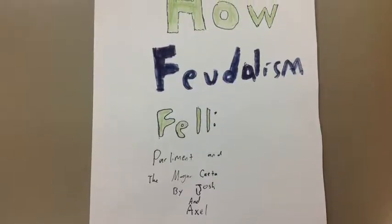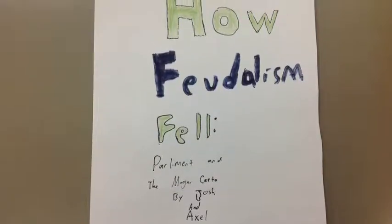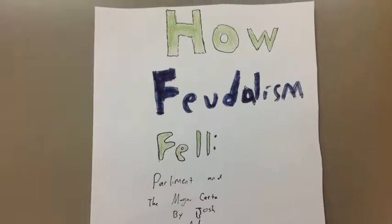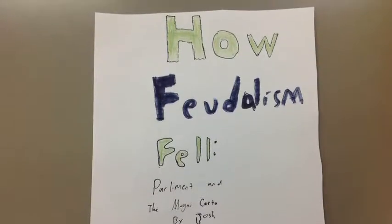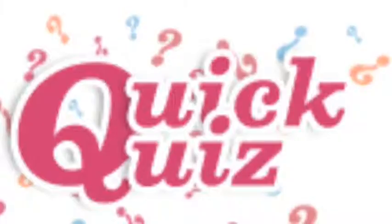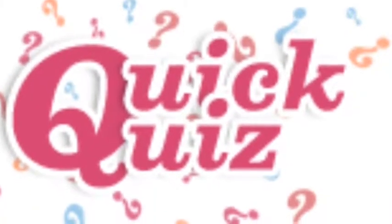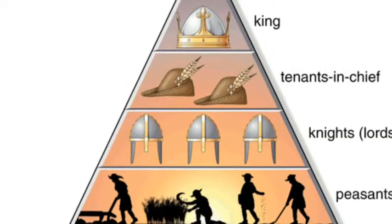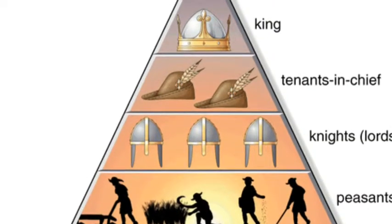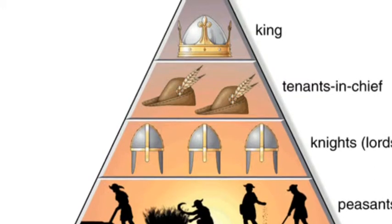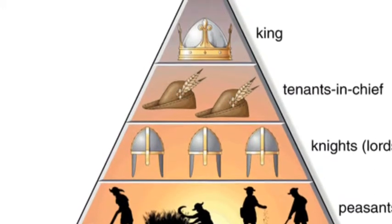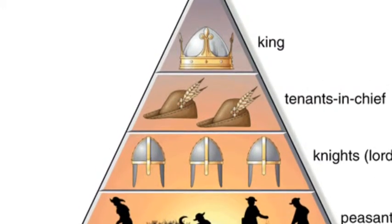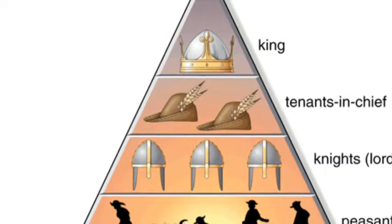Feudalism fell because of some main factors, including the creation of Parliament and the signing of the Magna Carta. Feudalism is a loosely organized system of government in which local lords governed their own lands but owed military service and other services to a greater lord.